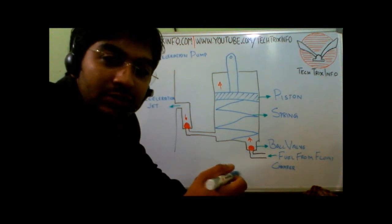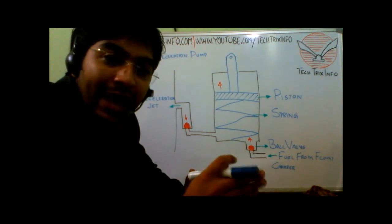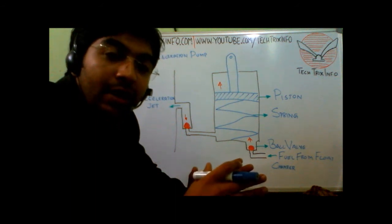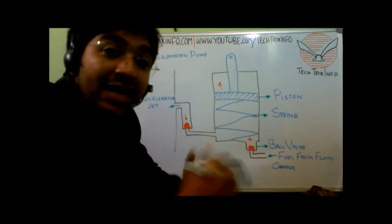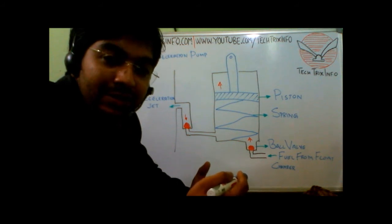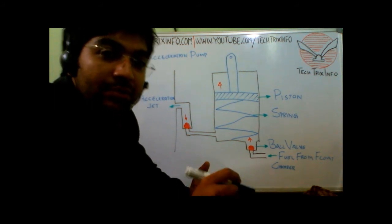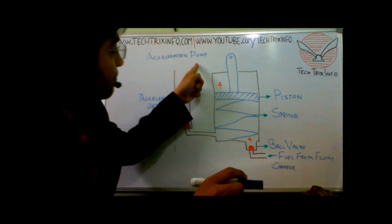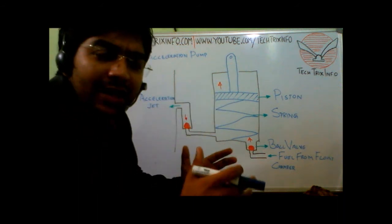To avoid this and to supply the required amount of fuel in proportion with the amount of air being supplied, an additional pump is employed in some types of automobiles. This pump is called the acceleration pump. Let's see how it actually works.